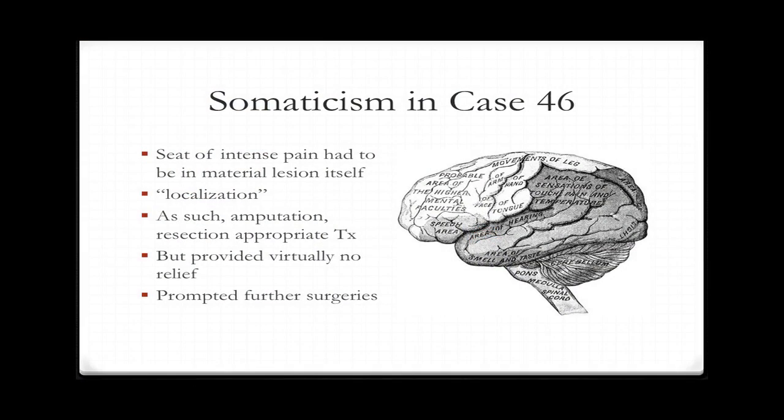In all of localization, you see this emphasis on material structure and lesions. Amputation and resection thus becomes appropriate treatment — it makes sense in context of the time, but it provided virtually no relief and prompted further surgeries. This is very common in contemporary chronic pain treatments; patients report a constant go-around, some relief, then return. At the end of case 46, Dr. Knott says he believes his patient was much eased by the final procedure, but that his craving for opium caused him to malinger.